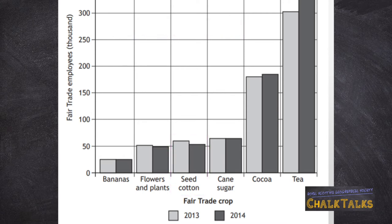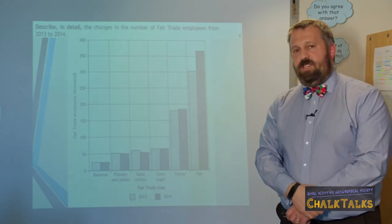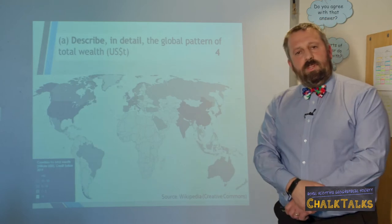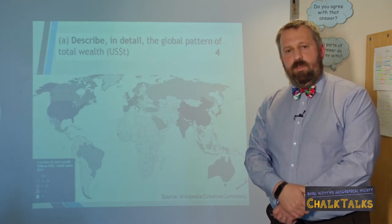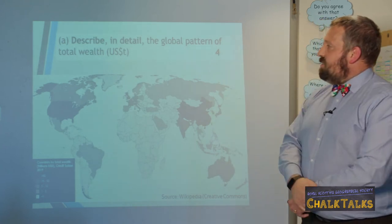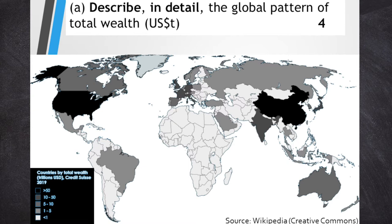If you find two figures that are roughly the same, as is the case with employees in bananas, it's probably best not to mention them, because the question does ask you to describe the changes, not areas where there weren't any changes. There has not, up to this point for Trade and Globalisation, been a question that asks you to describe patterns from a map. However, there is no reason why this can't happen in the future. The question I've written is: describe in detail the global pattern of total wealth in trillions of US dollars. To pick up marks for a question like this, you'll simply need to name countries or specific regions of continents and give figures from the key in the corner of the map. For example, most of Western Europe has a wealth of between 10 and 50 trillion US dollars, whereas the USA has wealth of over 50 trillion US dollars.